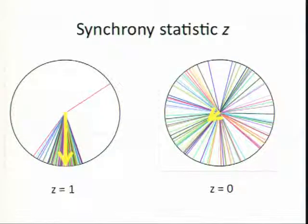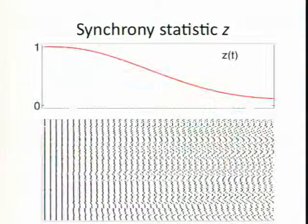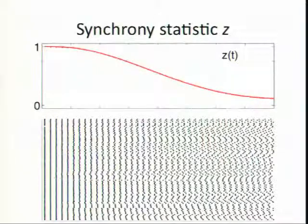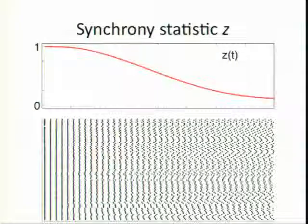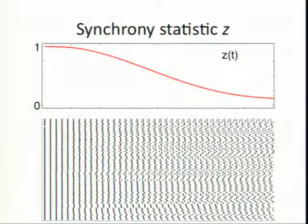So we have a model, easy to understand. It's a network model. We get synchrony out of it. You can start to play around with it. We have this statistic that we can use. So we see that the synchrony statistic, Z, does a good job of describing the system.